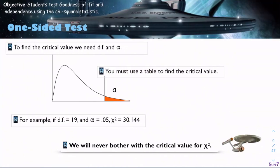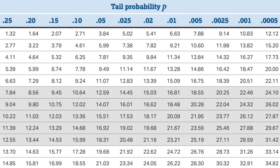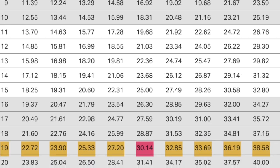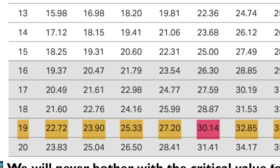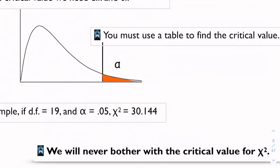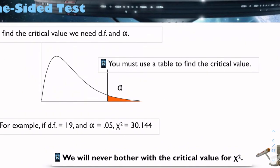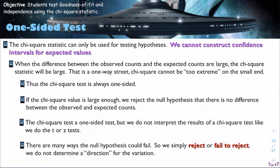Our chi-squared test, unlike other things, is a one-sided test. To find the critical value, we need the degrees of freedom and our significance level. Almost always, you're going to use a table to find the critical value. The AP test provides one for you. For an example, if degrees of freedom equals 19 and our significance level is 0.05, our chi-squared critical value is going to be 30.144. Note for us, we're never going to bother with the critical value for chi-squared.